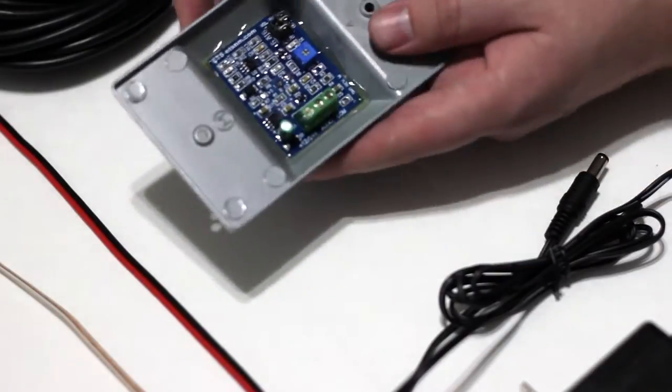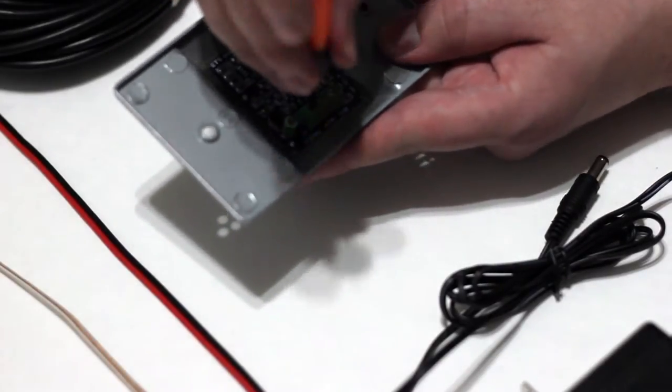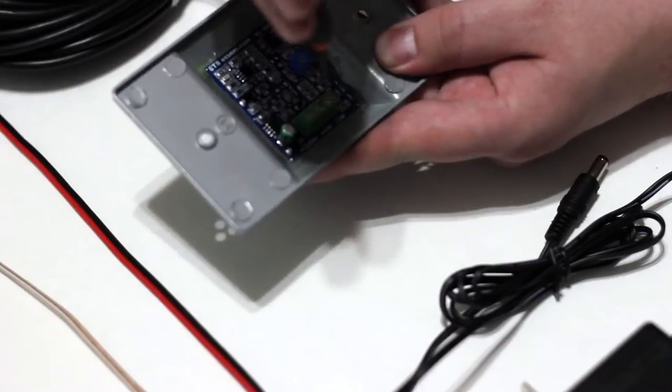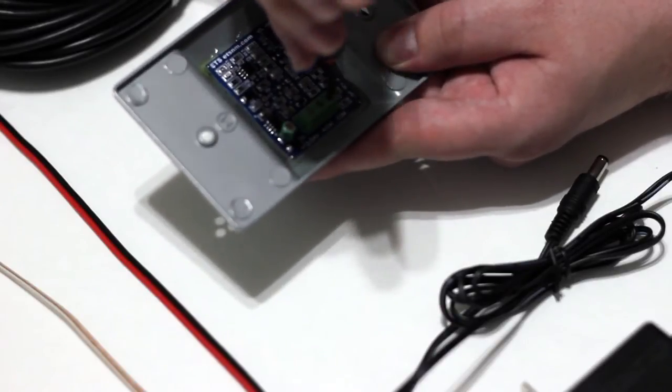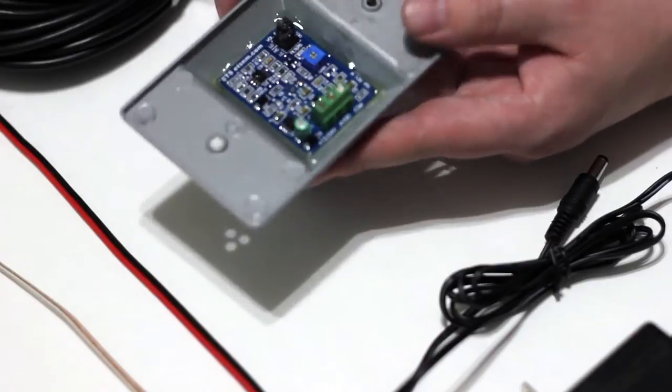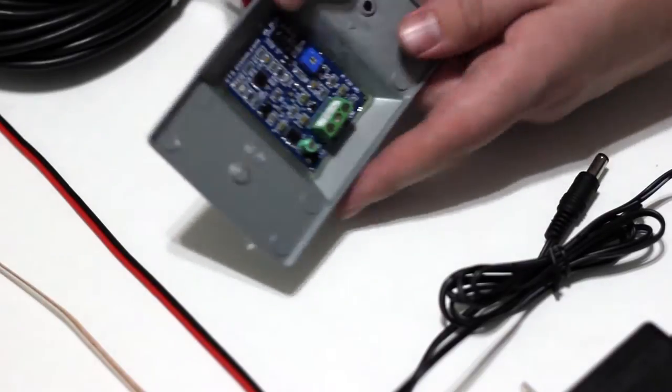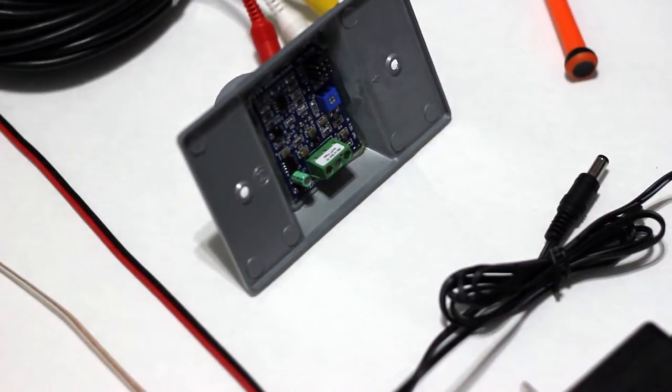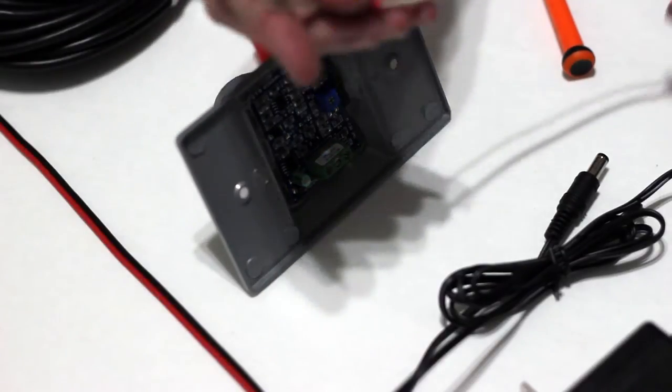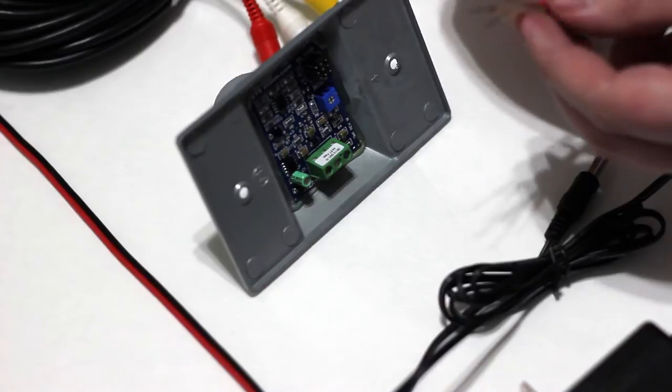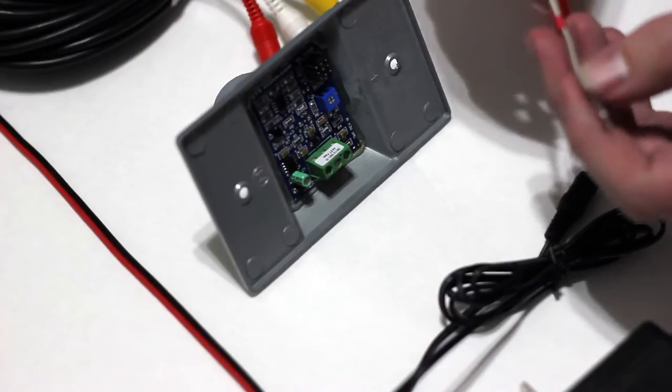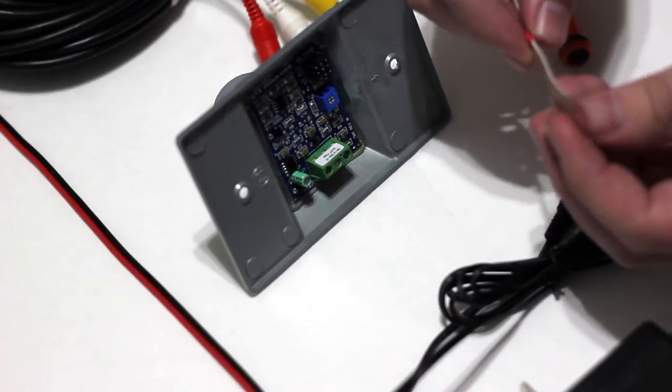So the first step is basically to go in here and back these off a little bit so that you have enough room inside the screw terminals for the wires. It just takes a couple twists and then they're pretty loose.